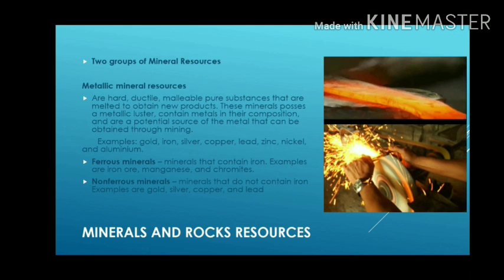The first group of mineral resources is metallic mineral resources. These are hard, ductile, malleable pure substances that are melted to obtain new products. These minerals possess a metallic luster, contain metals in their composition, and are a potential source of metal that can be obtained through mining. Examples of metallic mineral resources are gold, iron, silver, copper, lead, zinc, nickel, and aluminum.